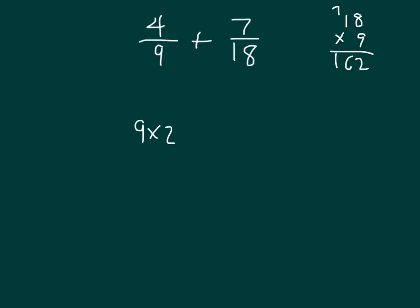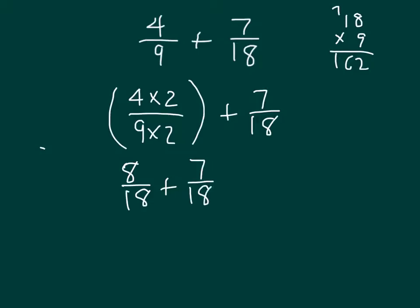What I can actually do is to get that common denominator of 18. If I multiplied by 2 in the denominator, then what I need to do is to multiply by 2 in the numerator as well. So that 4 ninths is actually equal to 8 eighteenths. And remember, I'm adding that together with 7 eighteenths. So 8 plus 7 eighteenths is equal to 15 eighteenths.